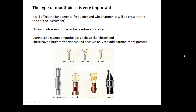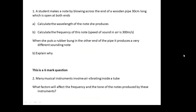Imagine the sound made by a trumpet compared to the sound made by a flute, which is a lot sweeter. Here are a couple of questions you can have a go at. A student makes a note by blowing across the end of a wooden pipe 30 cm long, which is open at both ends — very similar to the one I did earlier in the video. The second one is an example of a six-mark question: many musical instruments involve air vibrating inside a tube — what factors will affect the frequency and the tone of the notes produced? Get some of it learned and be ready for questions like this.